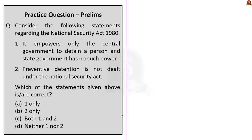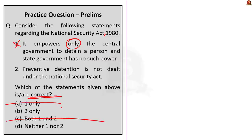Practice prelims question 3: Consider the following statements regarding the National Security Act, 1980. Statement 1: It empowers only the central government to detain a person — state government has no such power. Statement 2: Preventive detention is not dealt with under the National Security Act. Both the centre and the state have the power to detain under the NSA, so Statement 1 is incorrect. The NSA also prevents a person from disrupting public order through preventive detention, so Statement 2 is also incorrect. The answer is D: Neither 1 nor 2.